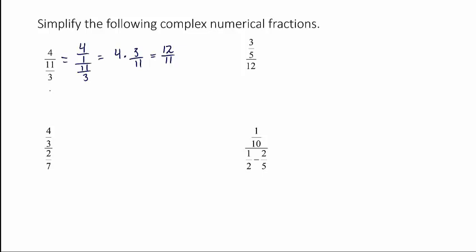Now let's approach that with the other method. Looking at the little denominators in the rational expression, the numerator is already just an integer. The denominator has a denominator of 3. So if we multiply the denominator by 3 and also multiply the numerator by 3, we end up with 12 in the numerator and the 3s cancel, leaving 11. We get the same result either way.